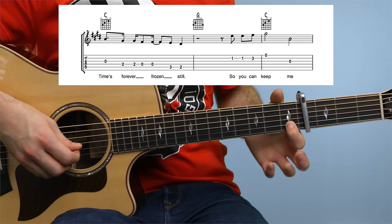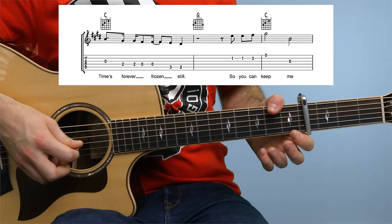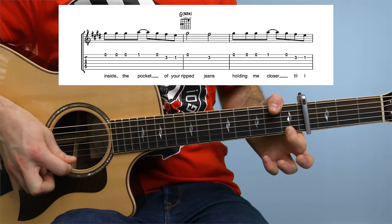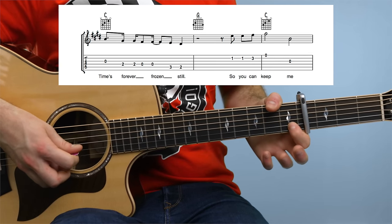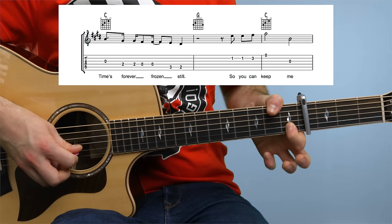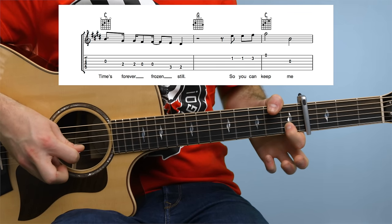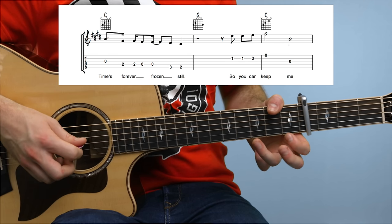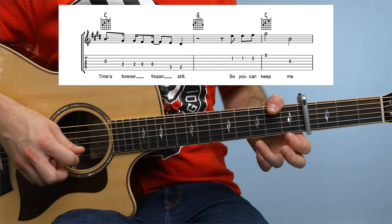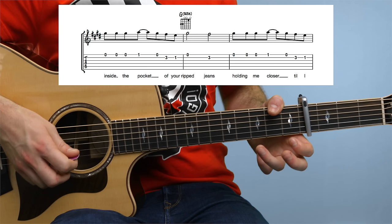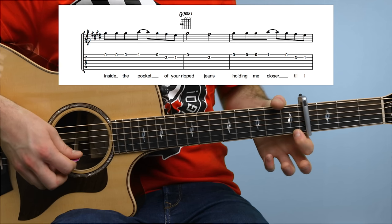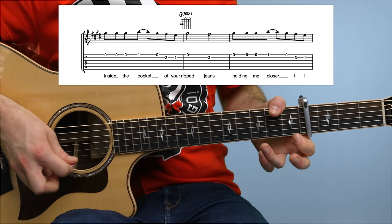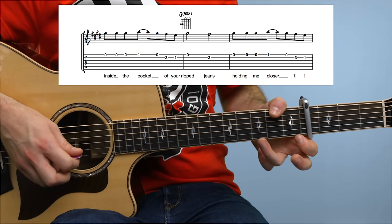And the chorus starts like this. Double 1, sorry, 3 on the second string, open first, open third. 3 open first string to fret number one, open, 3-1 on the second string.